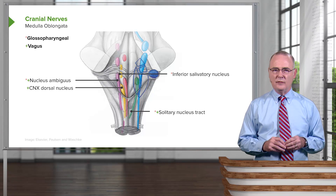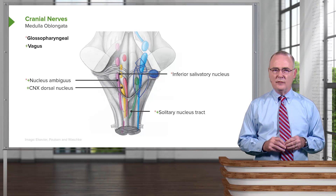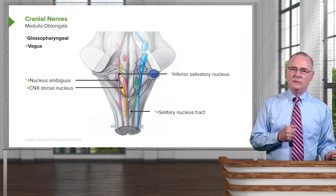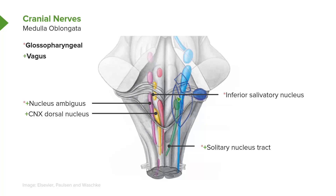Next are the vagal nerve nuclei. Some of these nuclei are shared with the glossopharyngeal cranial nerve nuclei, representing a division of function. For example, the nucleus ambiguus sends fibers through the glossopharyngeal nerve, and the solitary nucleus has a dual function shared by both glossopharyngeal and vagus. The cranial nerve ten dorsal nucleus is exclusive to the vagus nerve.